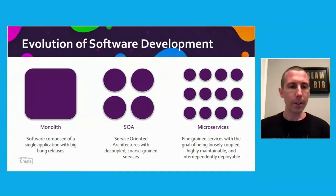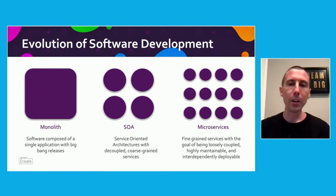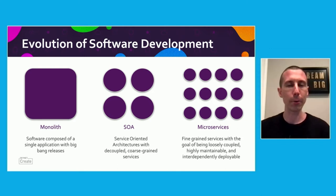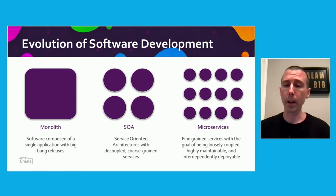Looking back at where we've come from, we really started developing what we now call monolithic applications, which were historically composed of these big bang releases, where you have tightly coupled applications. Organizations would release software every six months, every quarter, every year sometimes. And we found that that wasn't good enough to go as fast as we need to be going.